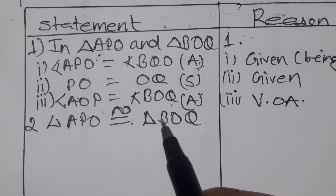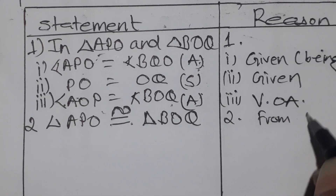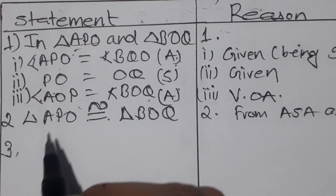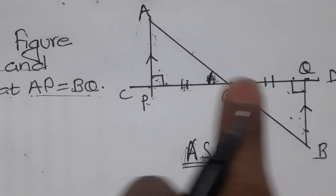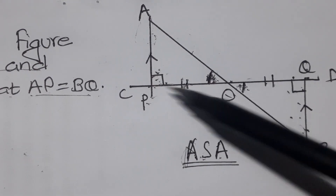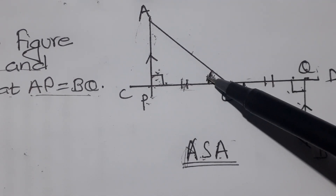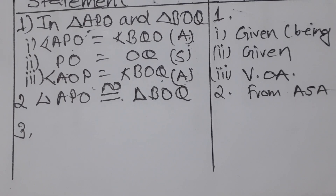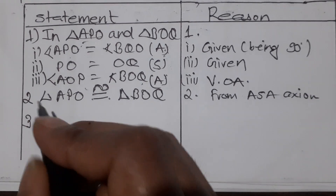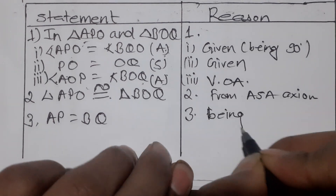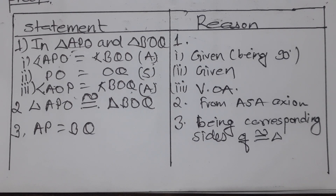Therefore, triangle APO is congruent to triangle BOQ by the ASA congruence criterion. Since the triangles are congruent, their corresponding sides are equal. Therefore, AP equals BQ, as corresponding sides of congruent triangles are equal.